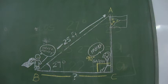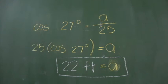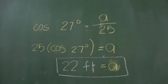Then, cosine 27 degrees is equal to A over 25. Using cross multiplication, A is equal to 25 times cosine 27 degrees. The value of side A is 22 feet. Go Mighty Matt!